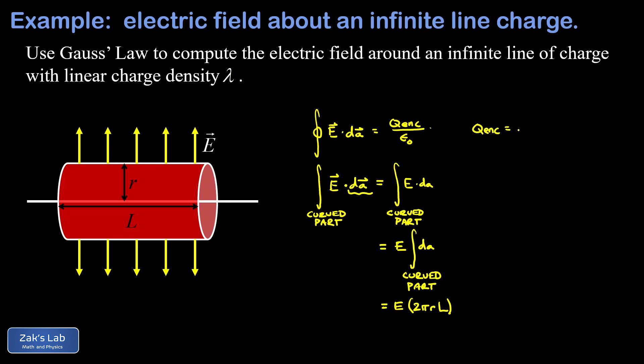And again what we can do with our linear charge density is just multiply it by the length in order to get the total charge along that length that sits inside the cylinder. So the enclosed charge is lambda L.